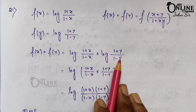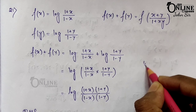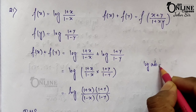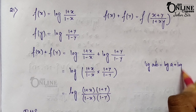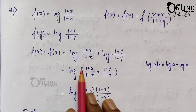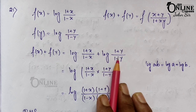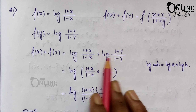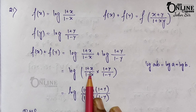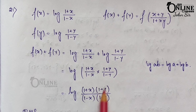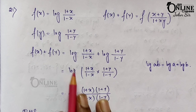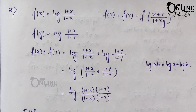Now you have to add these two functions. f(x) + f(y) will be log((1+x)/(1-x)) plus log((1+y)/(1-y)). As you know the formula: log(ab) = log a + log b. So considering these as a and b, log a + log b equals log(a × b). After multiplication write down (1+x)(1+y) / (1-x)(1-y). That is your left hand side.